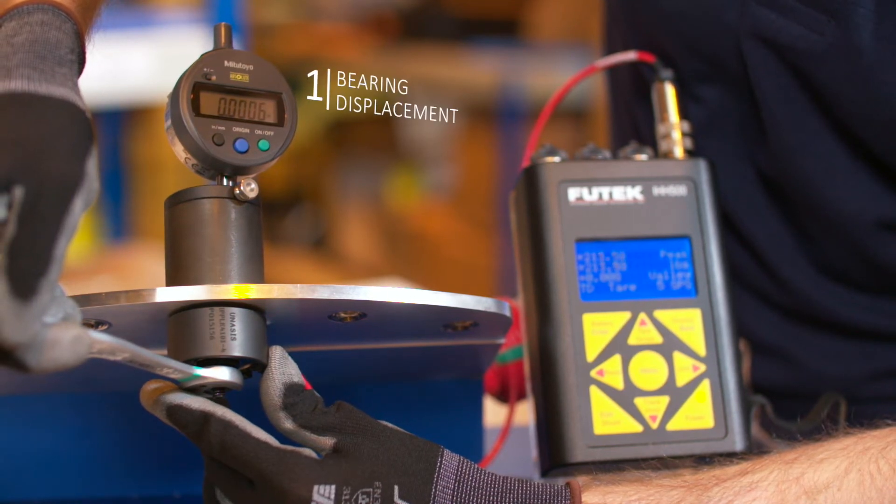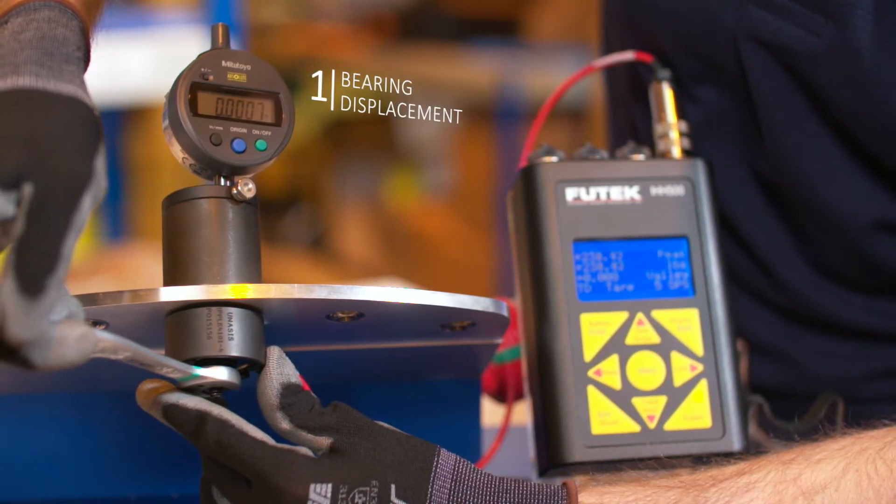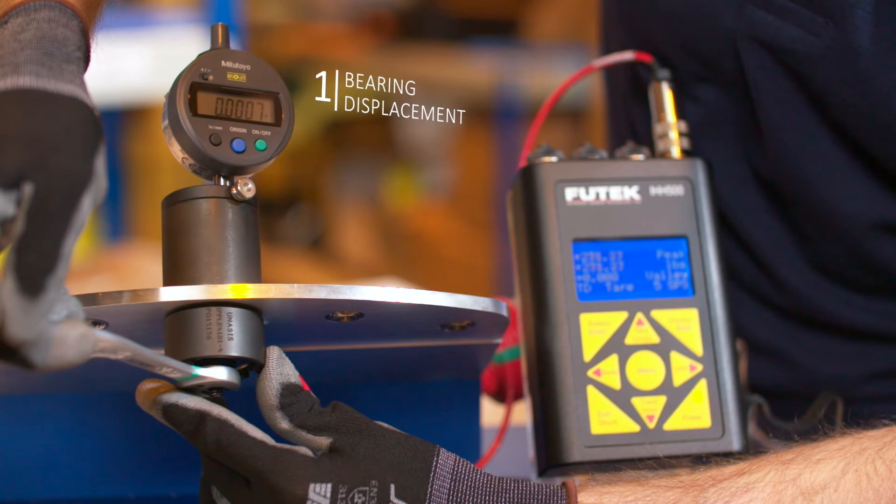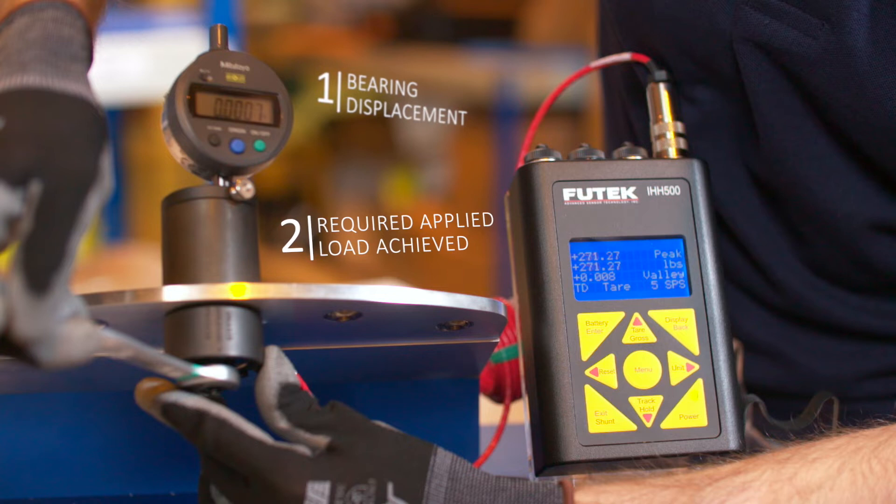When finished, record the linear displacement value as indicated on the DTI gauge and the peak load applied. The displacement of the bearing determines whether the installation is successful or not.